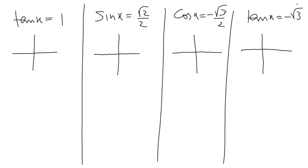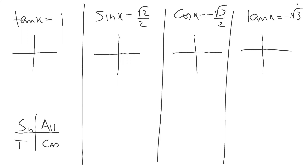We have four questions here. And every time, first of all we use the property of CAST. So C for cosine, A for all, S for sine, and T for tan — CAST.